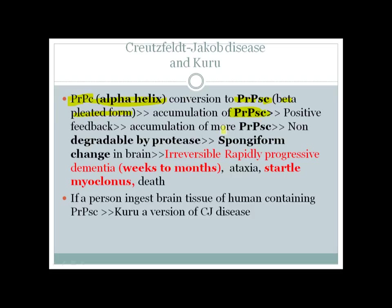There is accumulation of more PrPSc, and these beta-pleated sheets are not easily degradable by proteases. Over time, there is excess accumulation of PrPSc in the brain, which leads to spongiform changes. When these changes occur in areas controlling memory, it leads to rapidly progressive dementia.